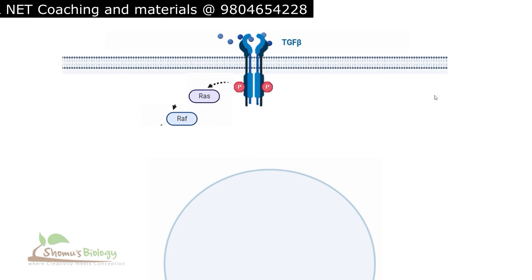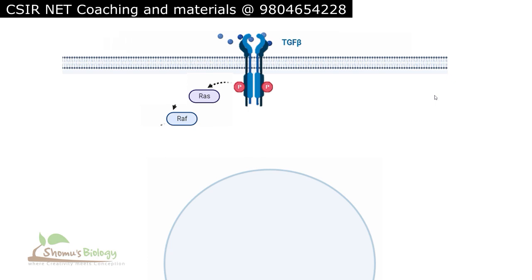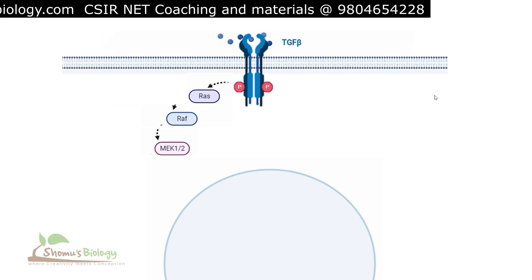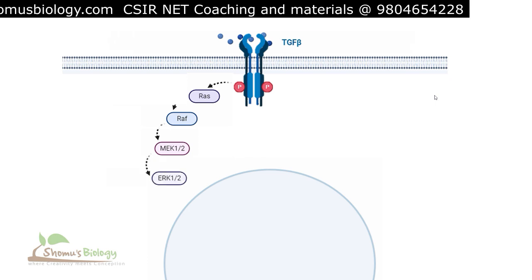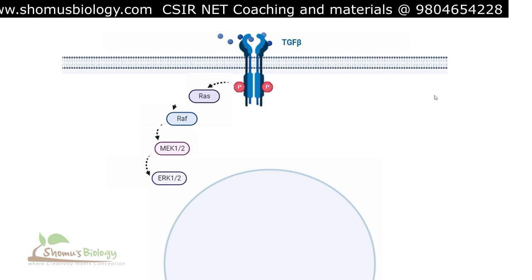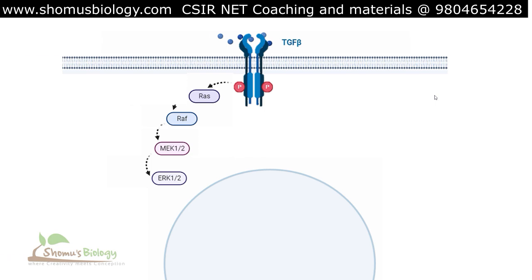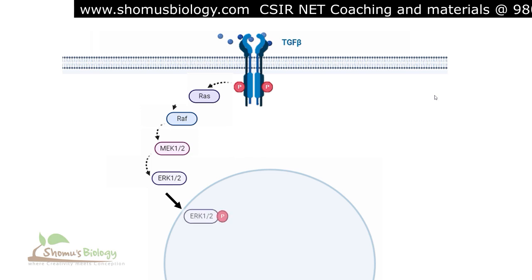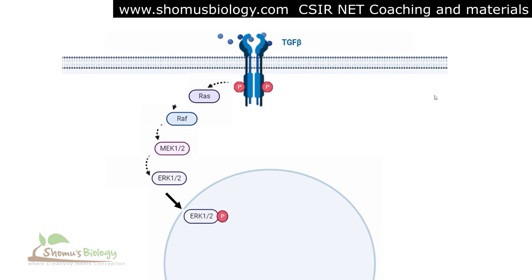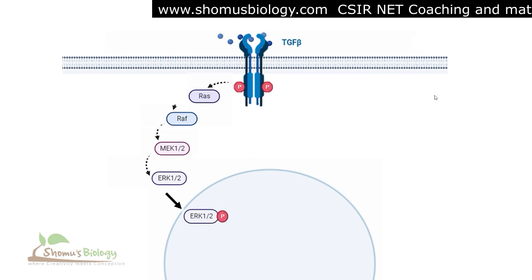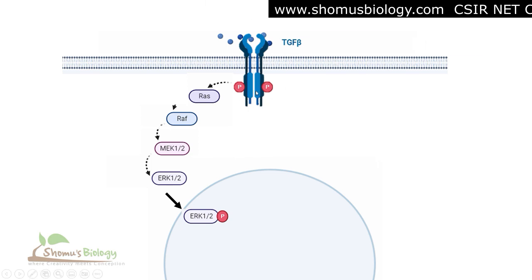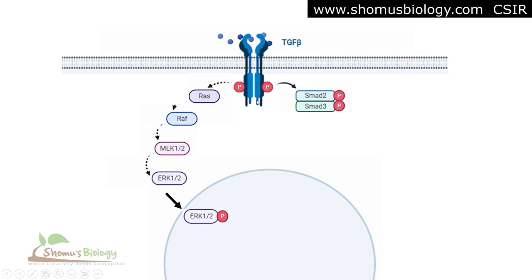The activated RAS protein activates RAF, which is a kinase. RAF phosphorylates and activates MEK1 or MEK2 in the cytosol. MEK kinase further phosphorylates and activates ERK kinase 1 or 2. Once ERK is active, it moves into the nucleus, where the phosphorylated — and thus active — form of ERK1 and ERK2 is present.